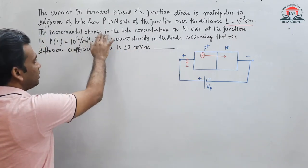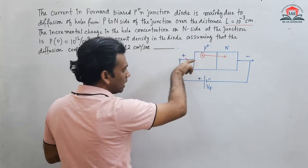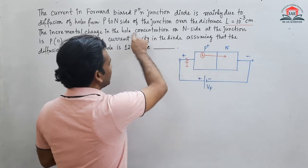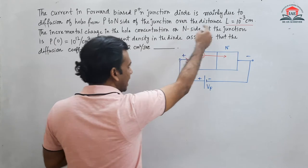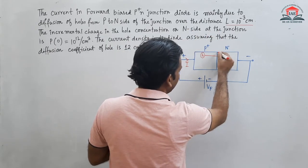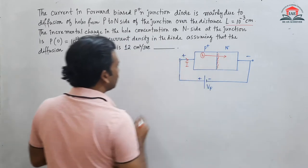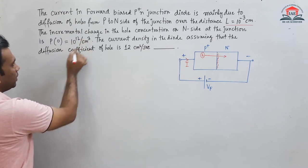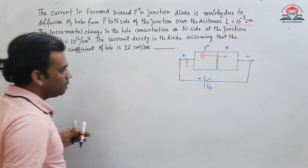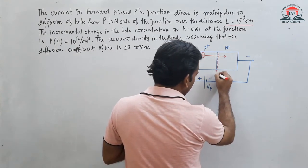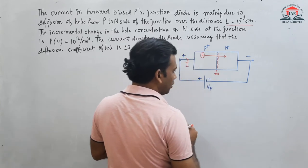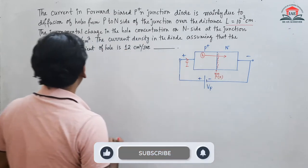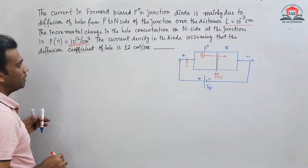The incremental change in the hole concentration on the N side — if holes go there, then the hole concentration on the N side will change. The hole concentration at the junction at x = 0, that is P0, is given as 10^12 per centimeter cube. So P0 = 10^12 /cm³ at x = 0.